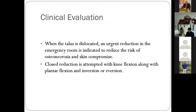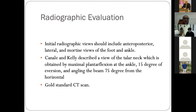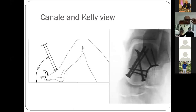Urgent reduction in the emergency room is indicated to reduce the risk of osteonecrosis and skin compromise. Closed reduction is attempted with knee flexion along with plantar flexion, inversion, and eversion. Repeated forceful attempts should be avoided — this can be considered a surgical urgency. Open fractures follow standard urgent irrigation and debridement principles. For imaging, the Canale and Kelly view describes the talar neck — obtained with 15 degrees of eversion and angling the beam 75 degrees from the horizontal. CT scan is the gold standard for fracture configuration.